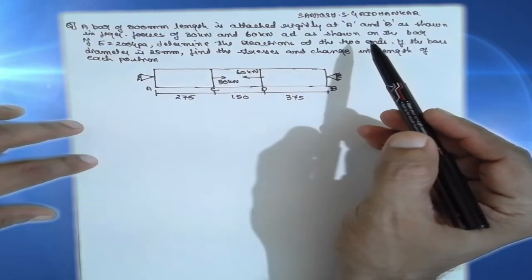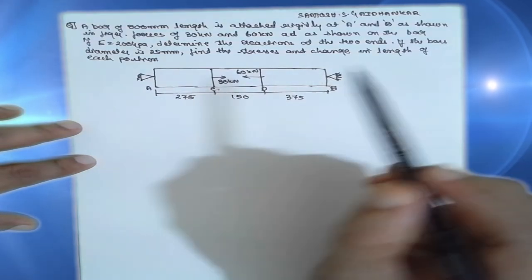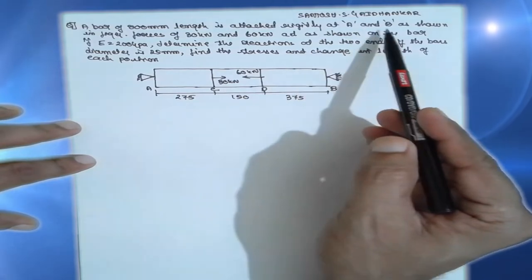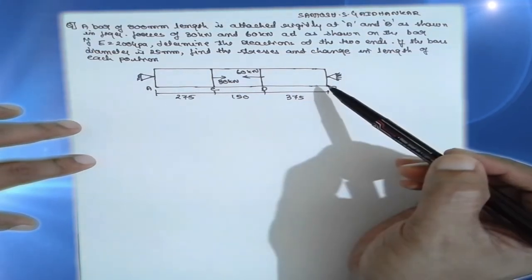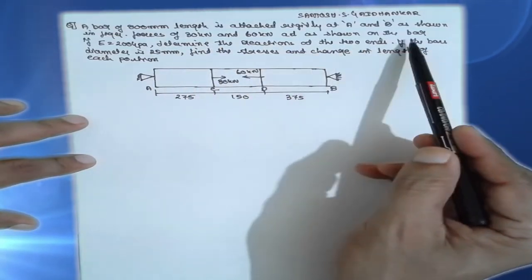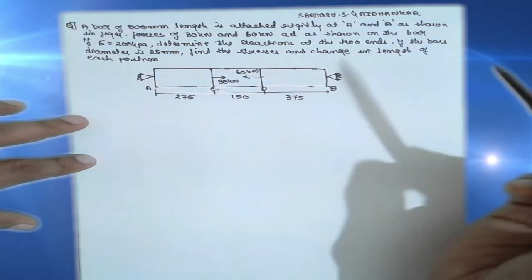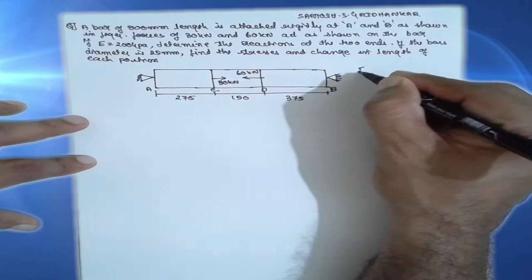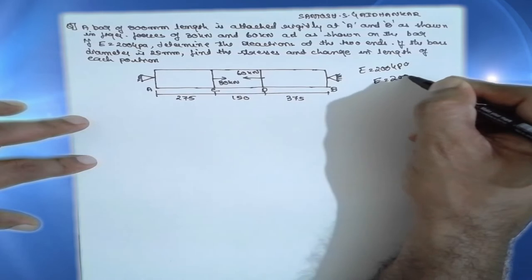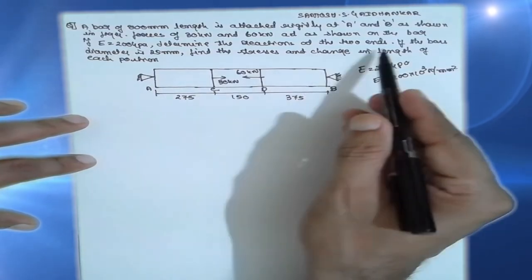I am Sandosh Gajanthakar. I am solving the problem of mechanics of materials for an indeterminate structure. Both ends are fixed. A bar of 800 mm length is attached rigidly at A and B as shown in the figure. The forces of 30 kN and 60 kN act as shown on the bar. Young's modulus E is equal to 200 GPa, which we convert to 200 × 10³ Newton per mm². Determine the reactions at both ends.